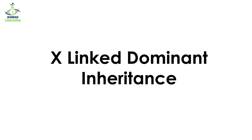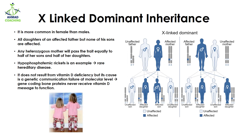Hello nerds, today we are going to study about X-linked dominant inheritance. X-linked means that the traits are present on the X chromosome. Dominant means that they are going to be dominant in the offspring and are not going to be masked by any other alleles. The X-linked dominant traits are more common in females than males.